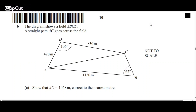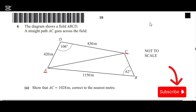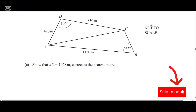Today we start from question 6. The question says the diagram shows a field ABCD, and a straight path AC goes across the field. The first question says show that AC is 1028 meters correct to the nearest meter. So we can see that they're asking us to find AC, the distance AC.